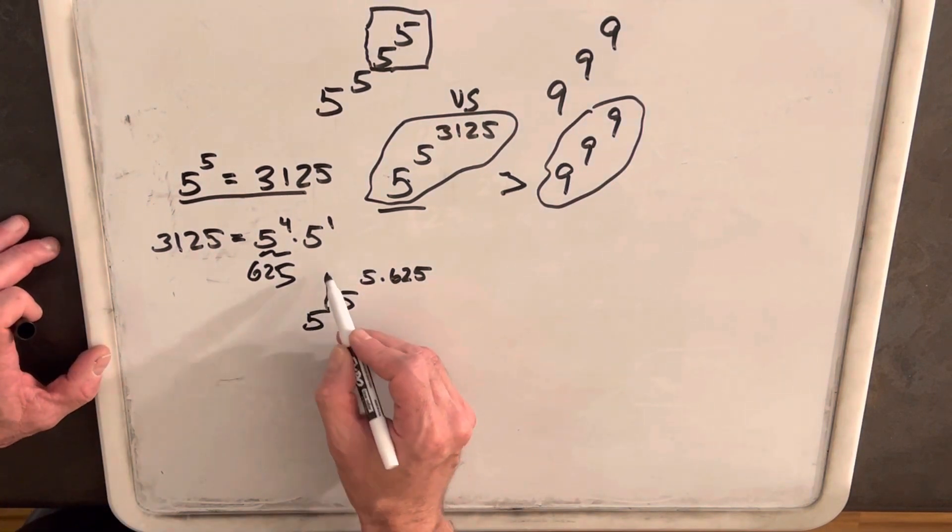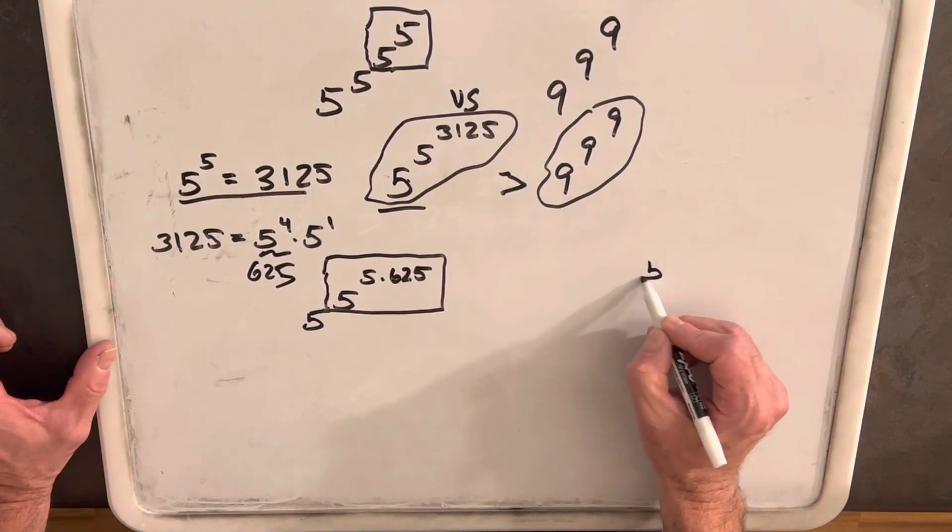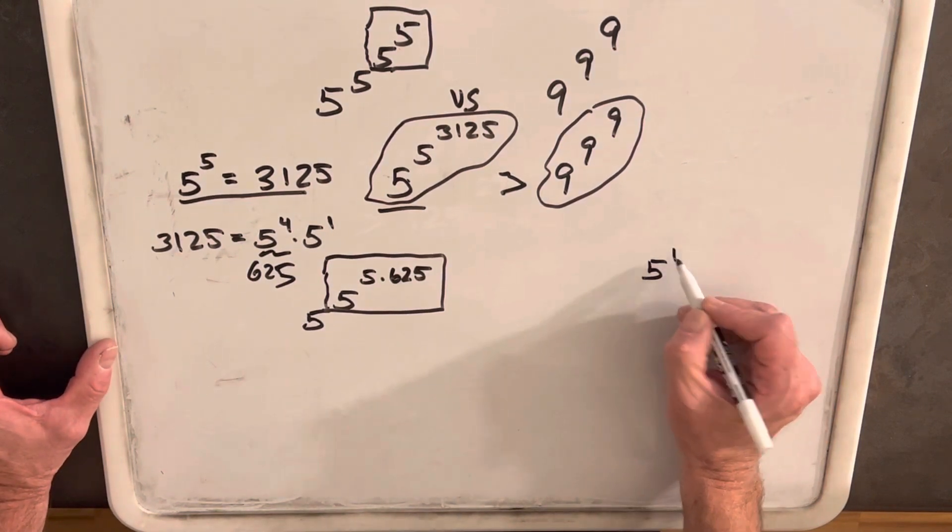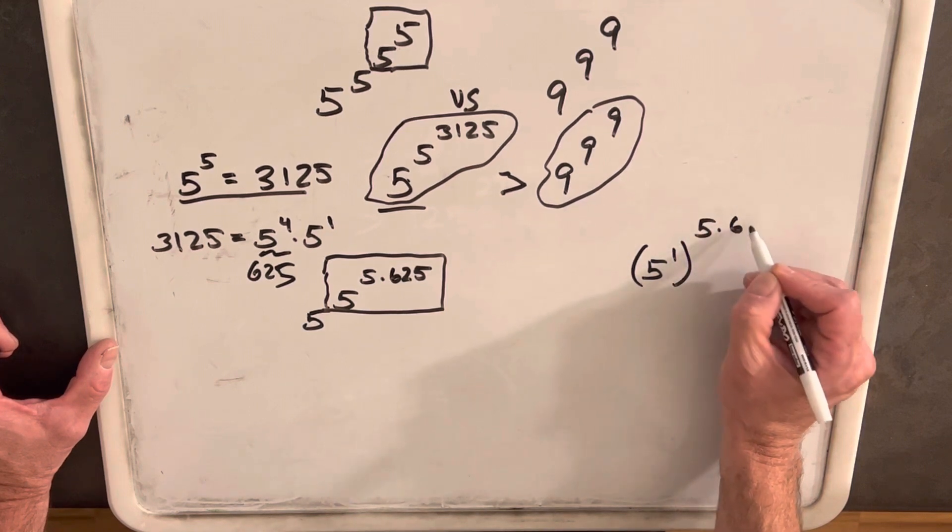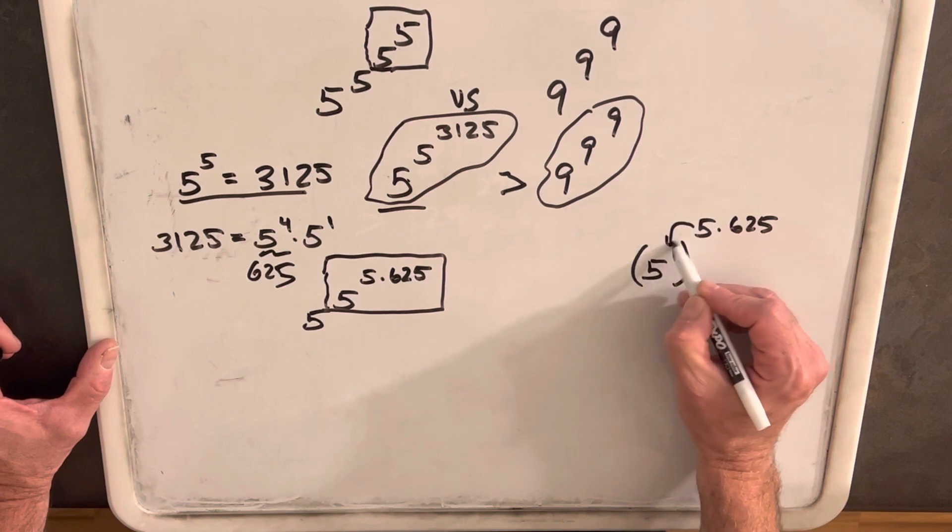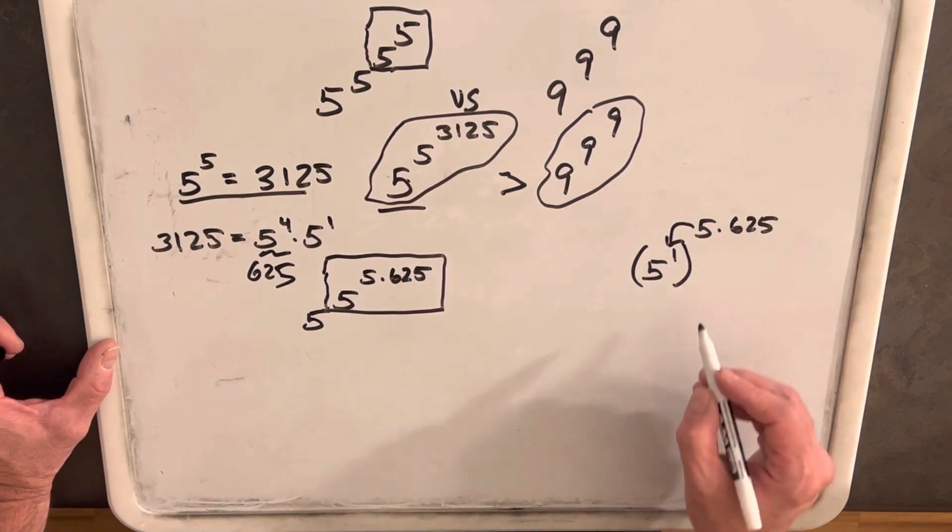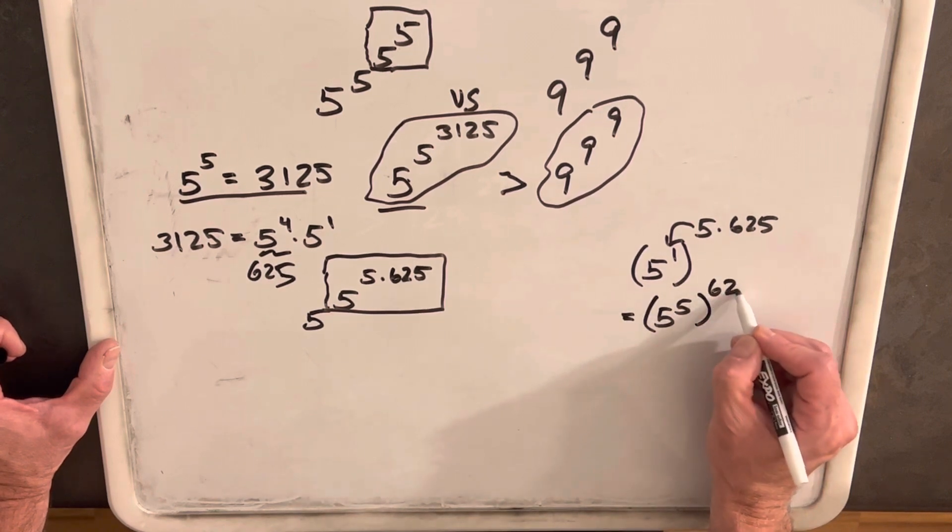Then let's just focus in on this piece. We have this exponent rule. The way I like to do this is let's look at 5 like 5 to the 1. And we have this exponent 5 times 625. Well, then we have the rule that just allows us to multiply this inside. And so this is going to be the same thing as 5 to the 5 to the 625.